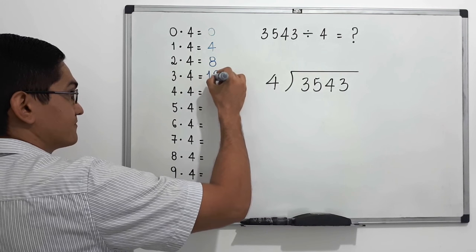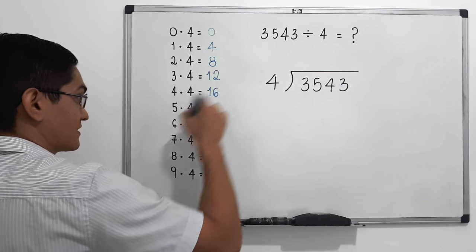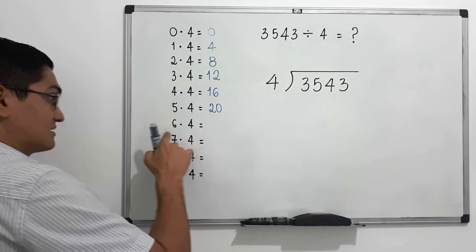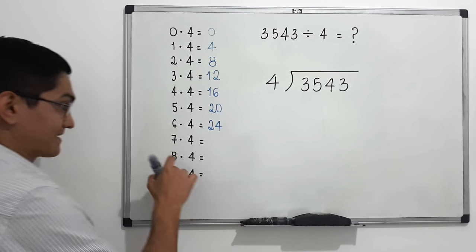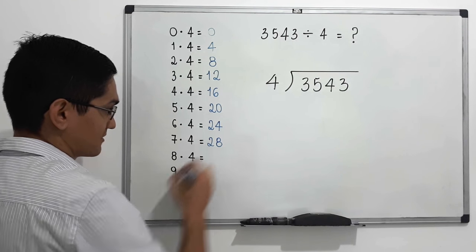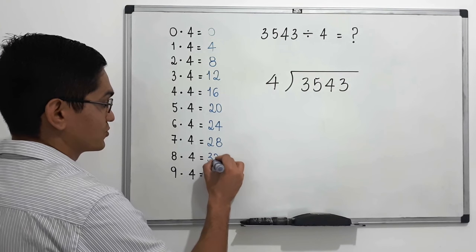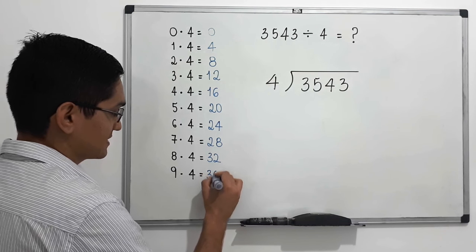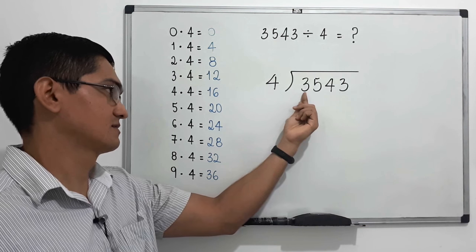Four times four equals sixteen, five times four equals twenty, six times four equals twenty-four, seven times four equals twenty-eight, eight times four equals thirty-two, nine times four equals thirty-six.